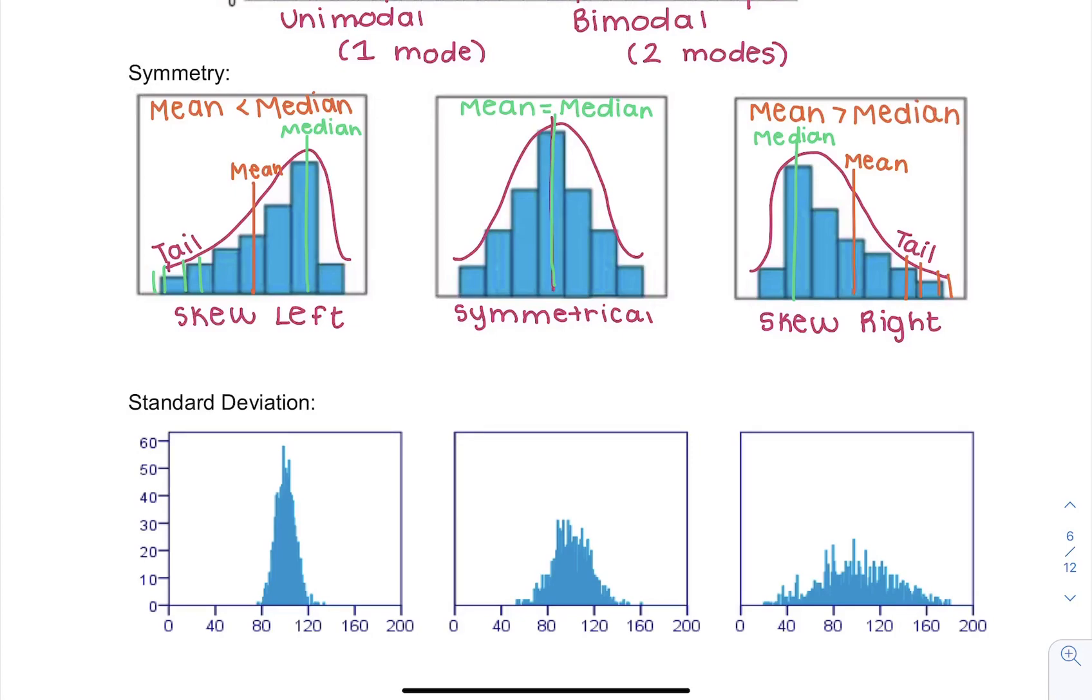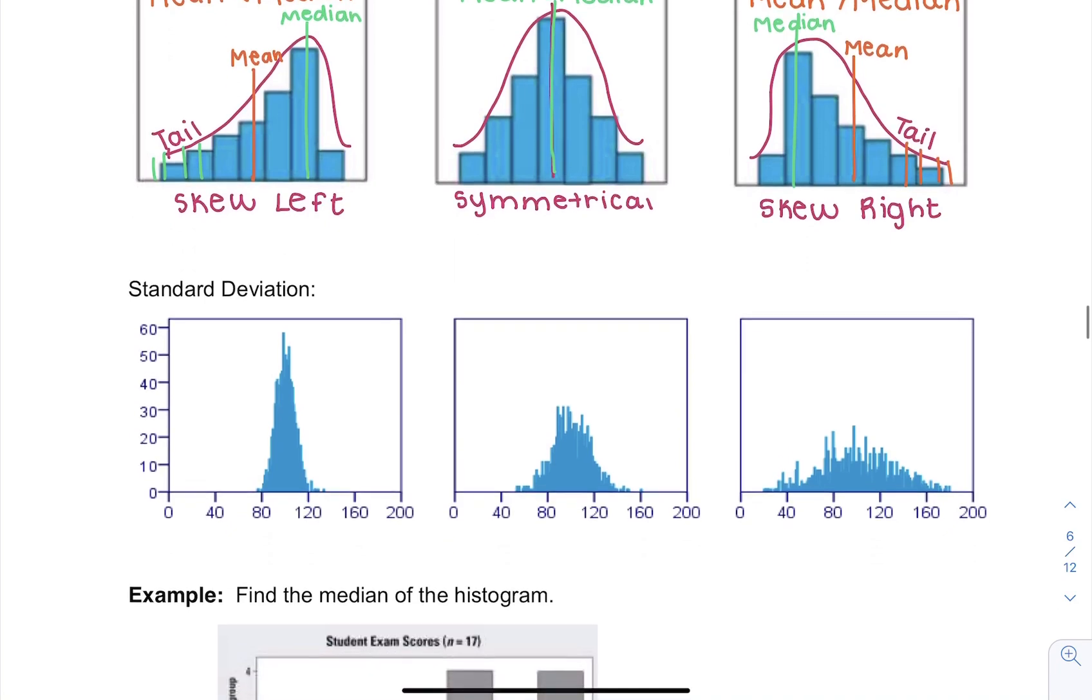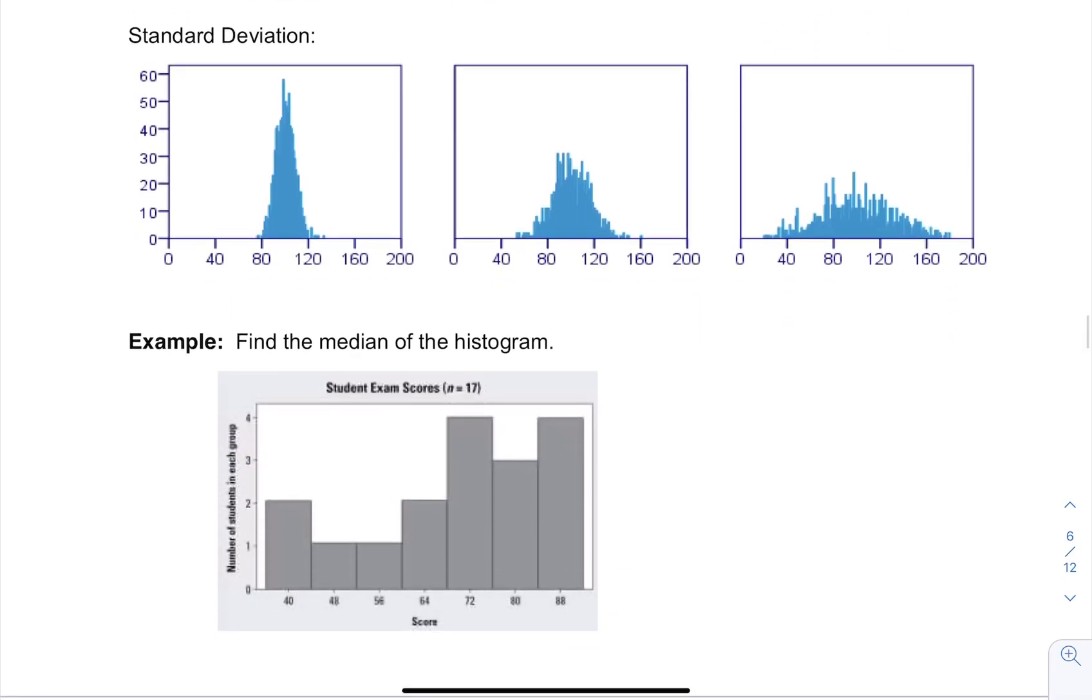Another way we can describe data is standard deviation. So standard deviation is talking about how spread out something is. And it really only makes sense to talk about standard deviation if we're talking about comparing different graphs.